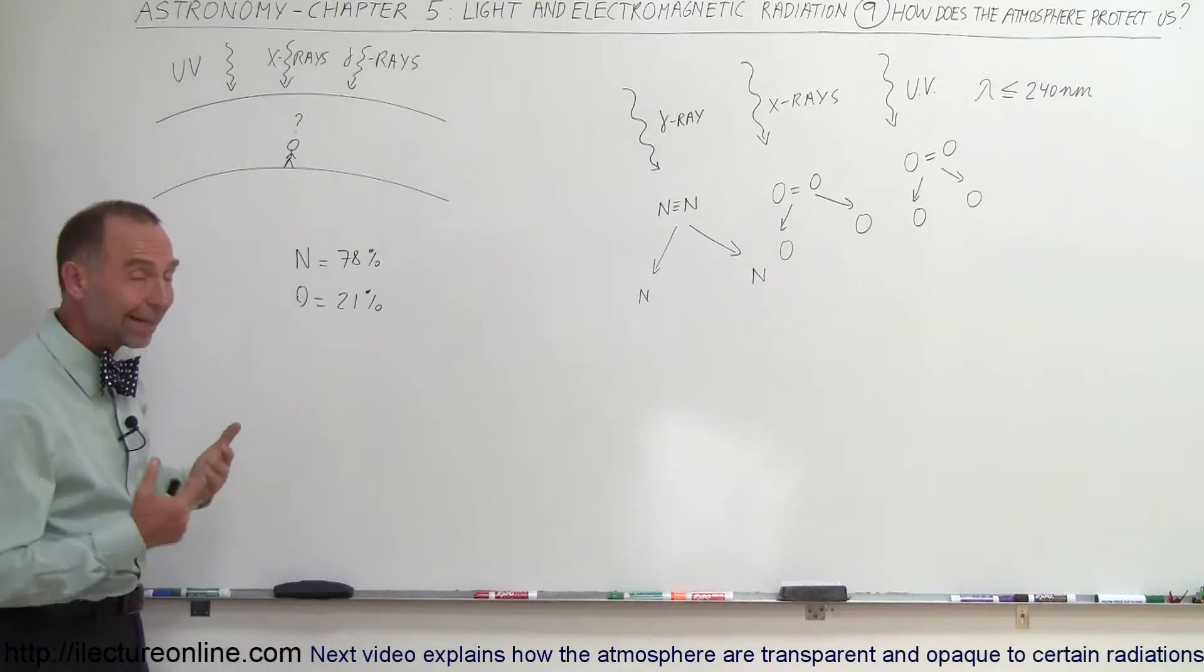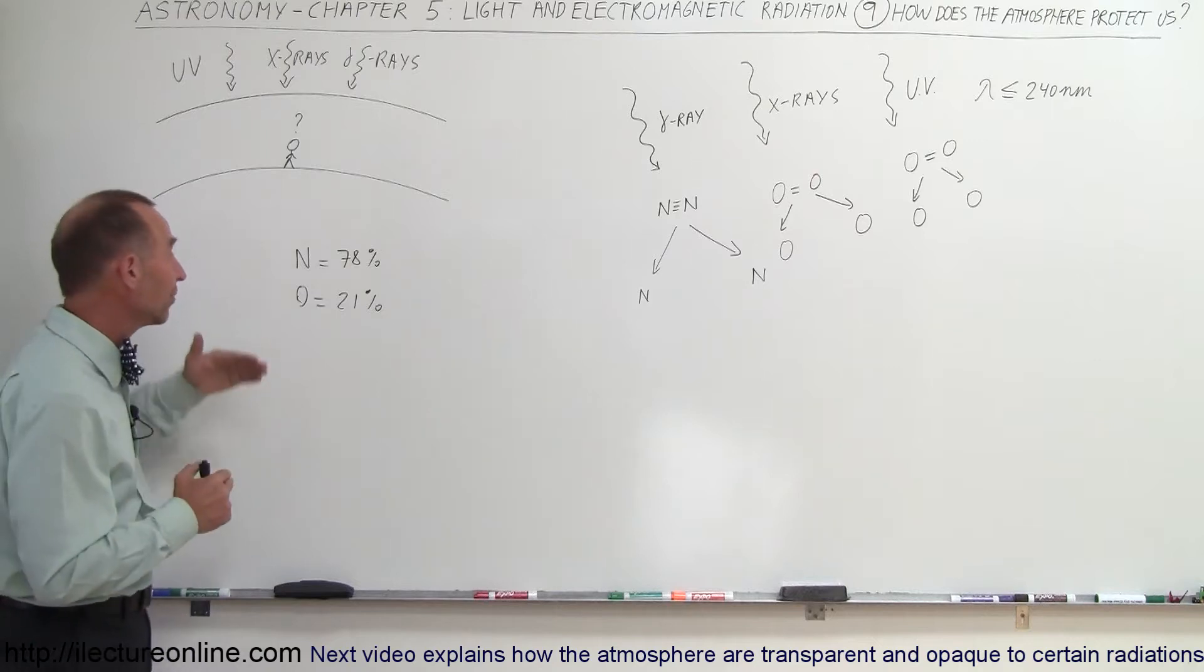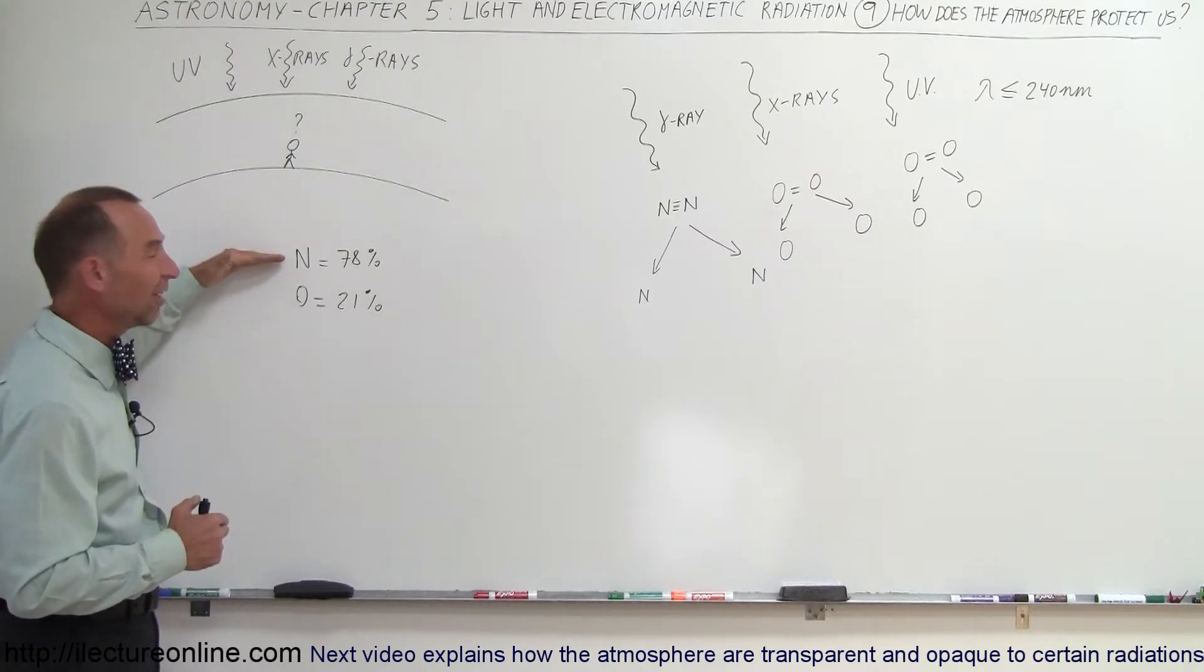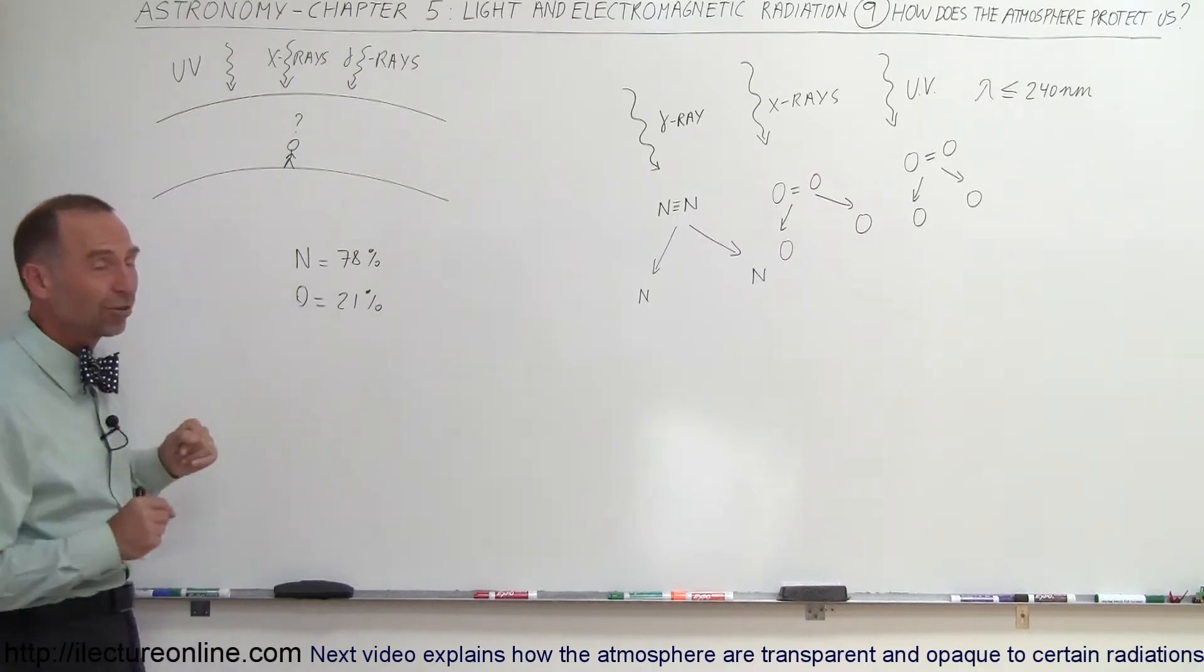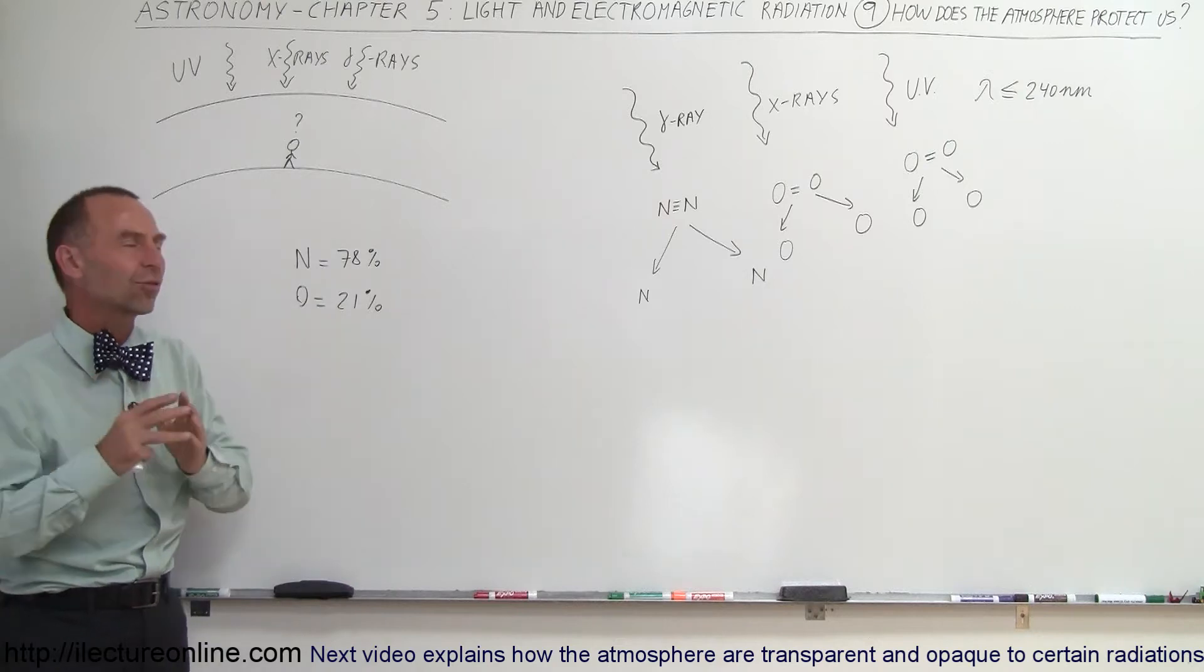It turns out about 99% of our atmosphere is made up of either nitrogen or oxygen: 78% nitrogen, about 21% oxygen makes about 99% of the atmosphere.